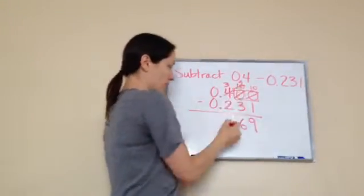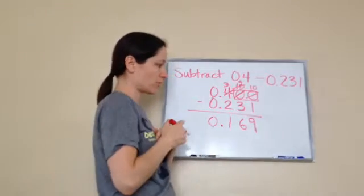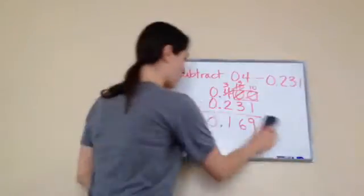Okay? 2 from 3 is 1. Bring down your decimal. And you can just bring down 0 from 1. Okay? So that's how we would work that one. Let's try one more.